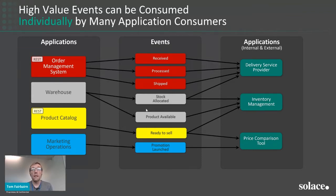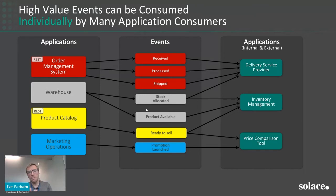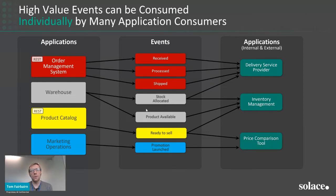Another monetization example is the connected car use case. Google had to drive cars around with detectors to map streets. Modern cars already have lidar for collision detection and cameras for lane detection. A car manufacturer could take that sensor data and sell it to third parties to build mapping applications — that's the kind of value you can unlock with event API products.